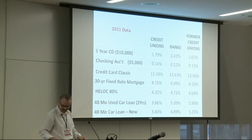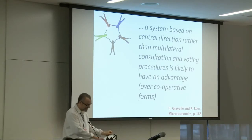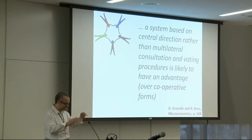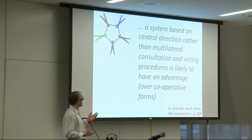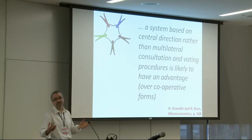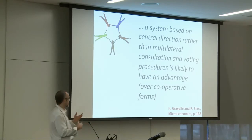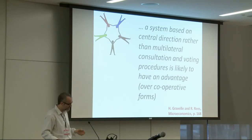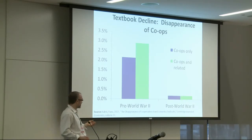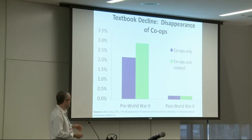I want to tie this back to the dichotomy issue that's the theme of this conference. A very common refrain in cooperative research is that a system based on central direction — a joint stock company, sole proprietorship, or partnership — is more efficient than an institution like a cooperative that has democratic structures built into it. There's a presumption that democratic structures are inherently inefficient. This idea has been at the heart of a very sharp decline in the teaching of cooperatives in economics, documented in a paper published in the Cambridge Journal of Economics by Panu Kalmy, showing cooperatives were very much on the scene in the pre-war period and then essentially disappeared from textbooks in the post-war period.